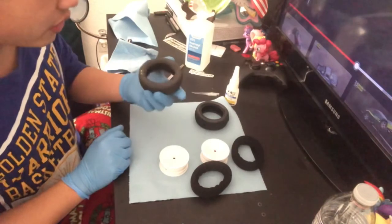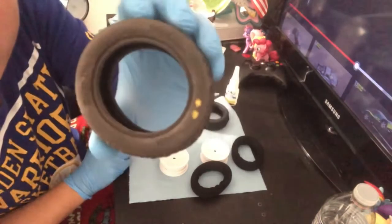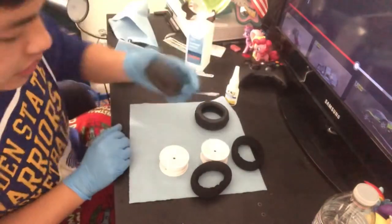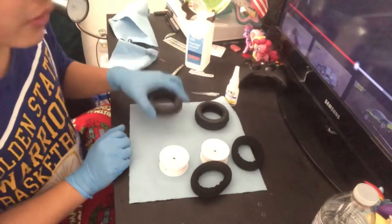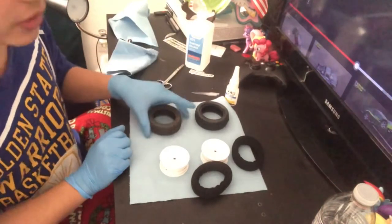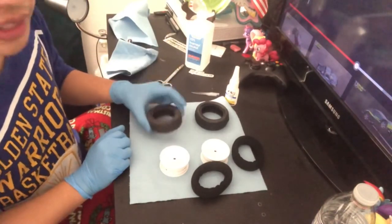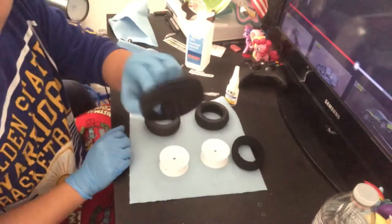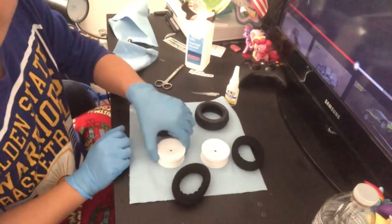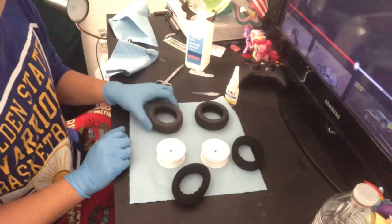I'm gonna do this tire off camera. As you can see, this one's a little bit dirty, so I'm actually gonna use some more rubbing alcohol and clean off the tire bead. Then we can go ahead and glue the tire onto the wheel.